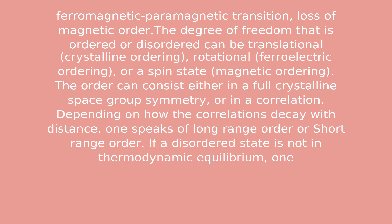The degree of freedom that is ordered or disordered can be translational, rotational, or a spin state. The order can consist either in a full crystalline space group symmetry or in a correlation. Depending on how the correlations decay with distance, one speaks of long-range order or short-range order.